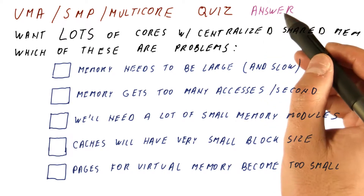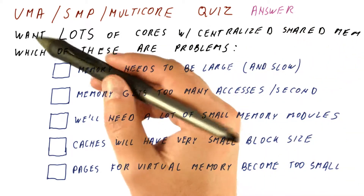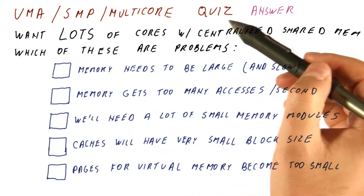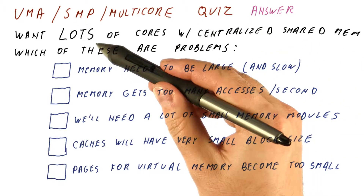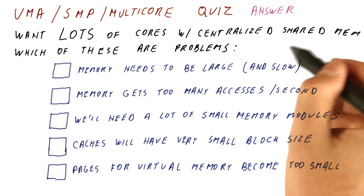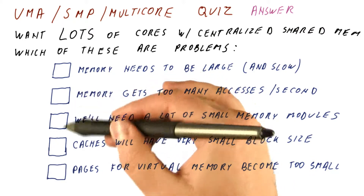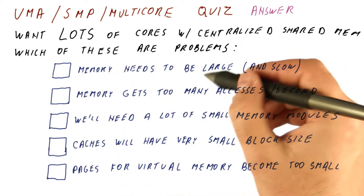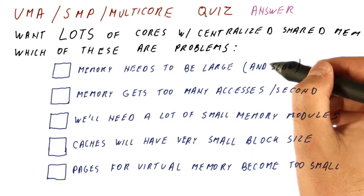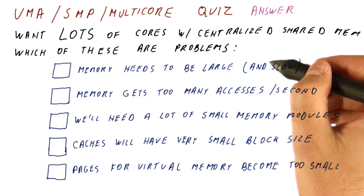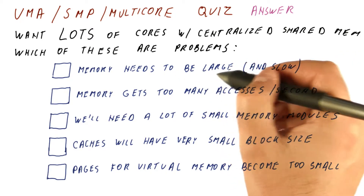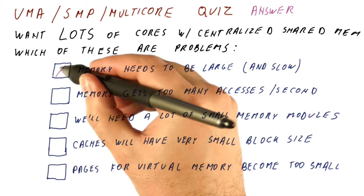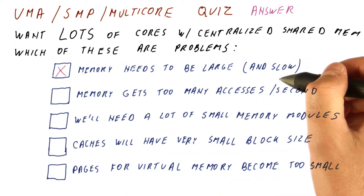Let's look at our answer to the UMA SMP quiz. We want to have a lot of cores with this type of architecture, so what are the problems we'll have to face? The memory will need to be large and slow, because having more cores usually means we will be running programs that access more data, and we need to keep that data somewhere. So we will need to have a large memory, and that makes the memory slow.